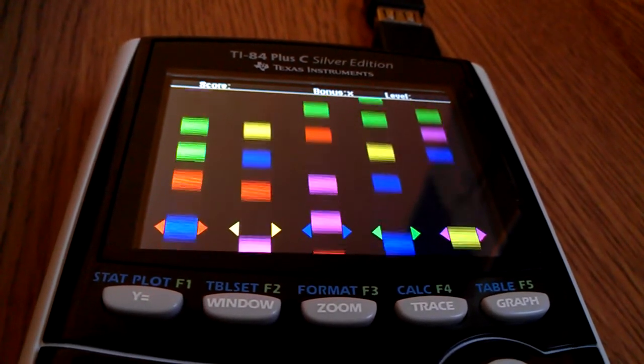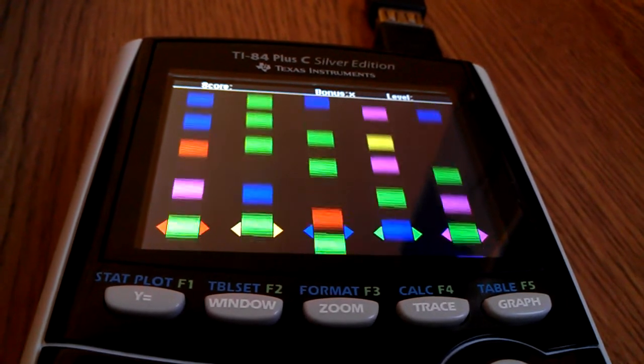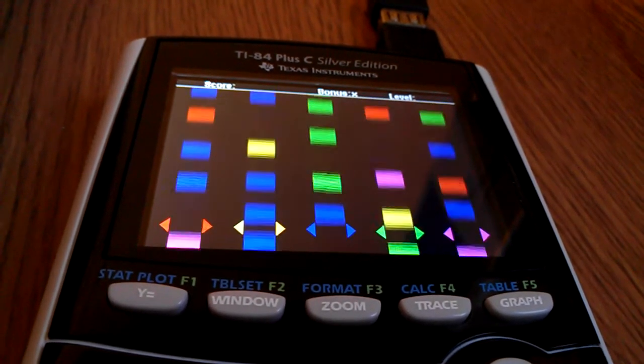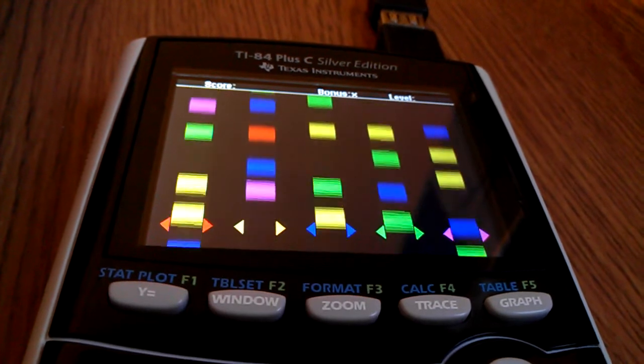The object of the game is to press the F1 through F5 keys to match the color of the blocks to the color of the arrows around it. The closer to the center of the blocks, the more points you get.